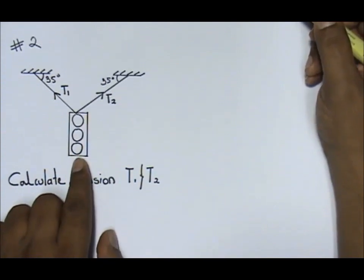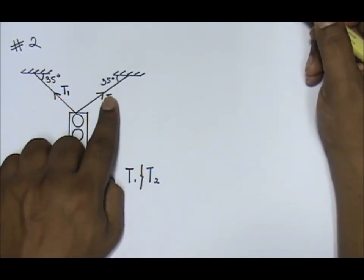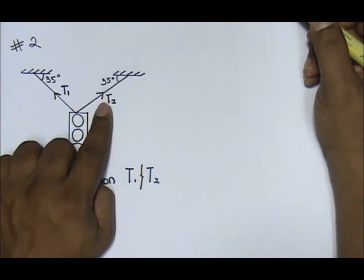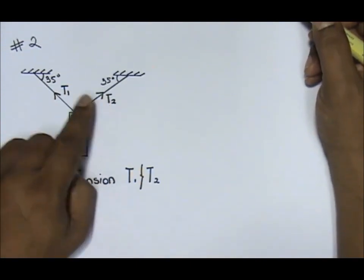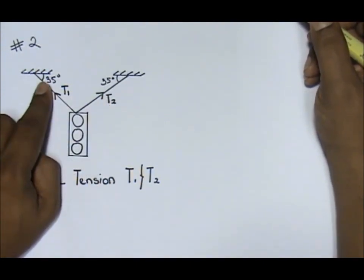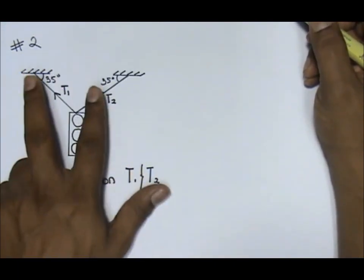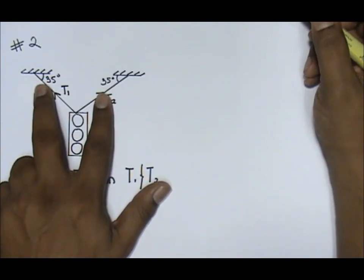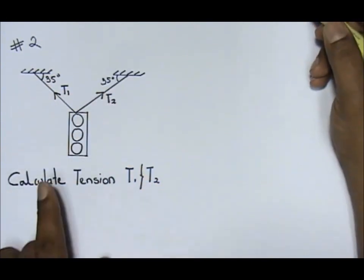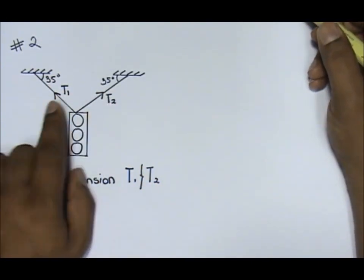This traffic light is hung using two cables labeled as T1 and T2, which is the tension for the cable. The angle it makes to the wall is 35 degrees for both. My question is calculate the tension T1 and T2.